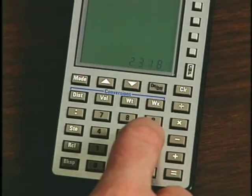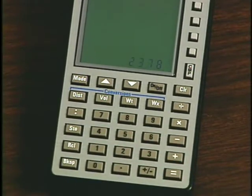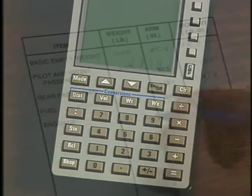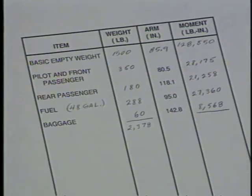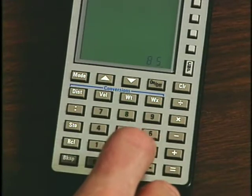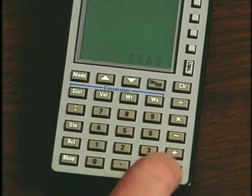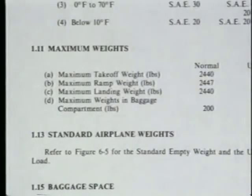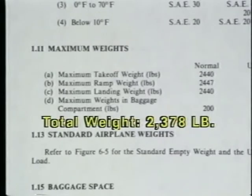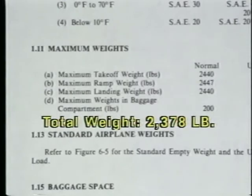The next step is to add the weight and moment columns. In this example, the total weight of the loaded airplane is 2,378 pounds and the moment is 214,211. You should then verify that the total weight is less than the maximum weight found in the POH or the weight and balance records. If not, you will have to make a choice of not carrying as much fuel, taking less baggage, or leaving some of the passengers behind.